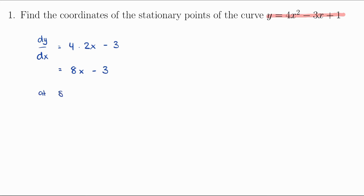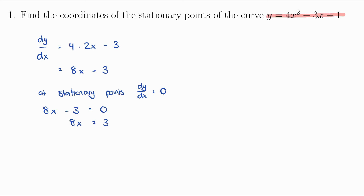At stationary points dy/dx = 0, which means 8x - 3 = 0. We can solve for x by adding 3 to both sides, giving 8x = 3. Then dividing both sides by 8 gives x = 3/8. So we have the x coordinate of our stationary point.